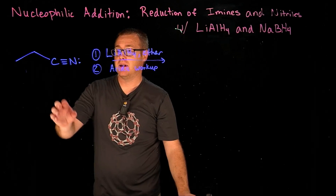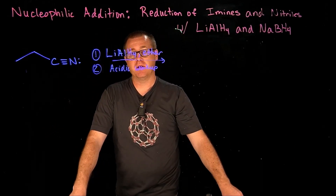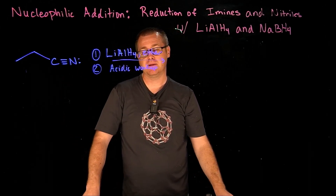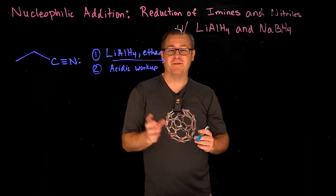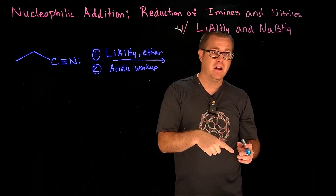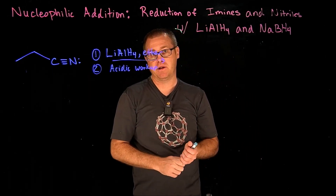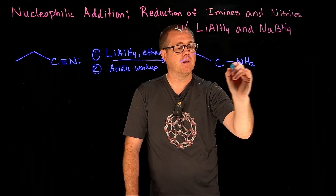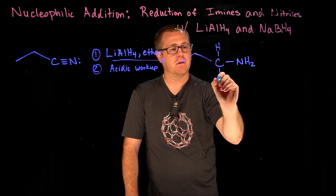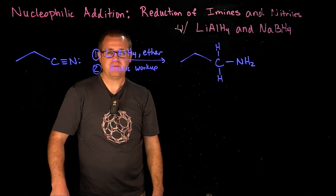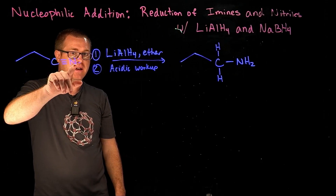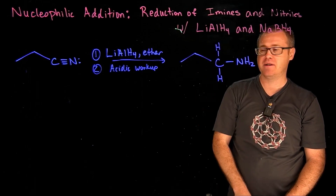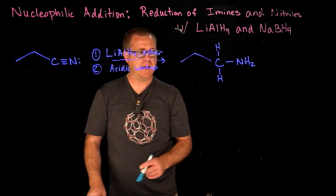Now let's look at a nitrile being reduced with lithium aluminum hydride. We don't typically use sodium borohydride because nitriles are harder to reduce. Interestingly, just as an imine gets reduced to an amine, nitriles also get reduced to an amine. Looking at the product: the starting nitrile carbon has no hydrogens and the nitrogen has no hydrogens, but in the end product two hydrogens have been added to the carbon and two hydrogens to the nitrogen. The mechanism will explain where these come from.